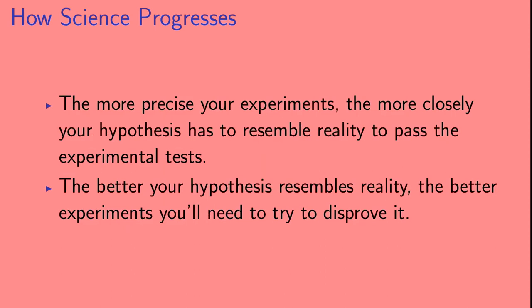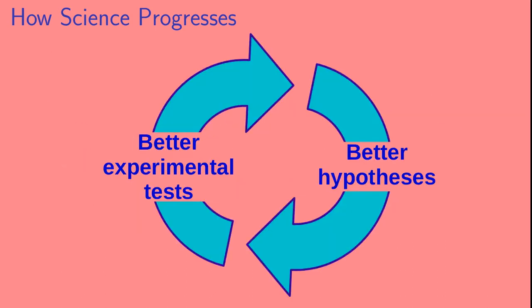The more precise your experiments, the more closely your hypothesis has to resemble reality in order to pass the experimental tests. And the better your hypothesis resembles reality, the better experiments you'll need to try to disprove it. So science basically works in this virtuous cycle, where better hypotheses lead to better experimental tests, and better experimental tests lead to better hypotheses.